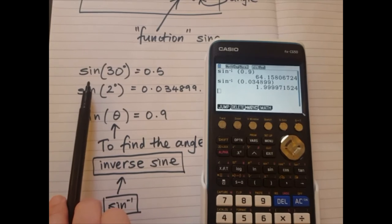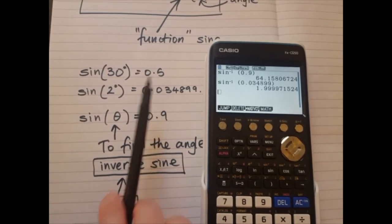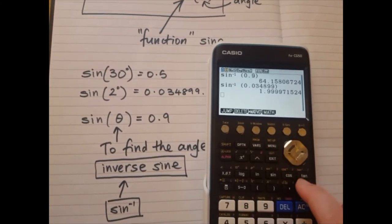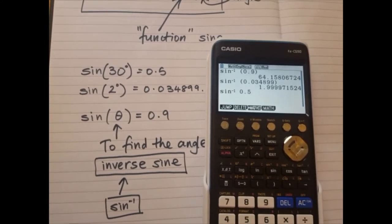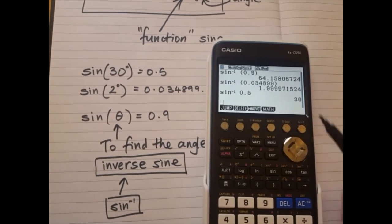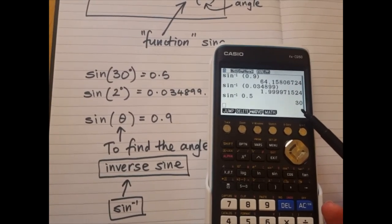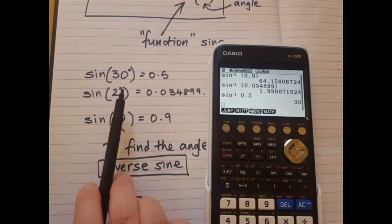Let's work backwards for the top one. In conclusion, if I type in 0.5 into inverse sine, it will give me the answer 30 degrees. And there it is, 30 degrees.